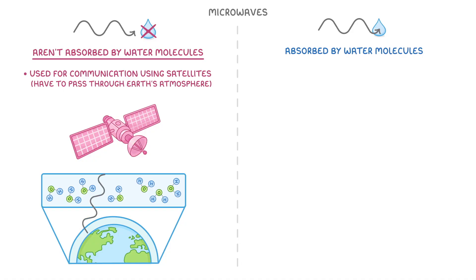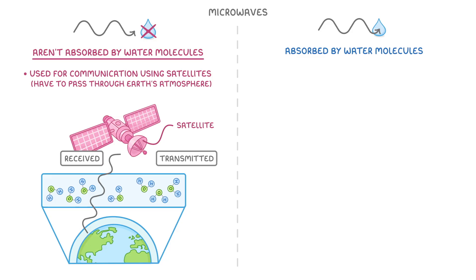Once the microwaves make it through, they are received by a satellite, and then they're transmitted back down to Earth, where we can detect them using a satellite dish to get things like satellite TV.